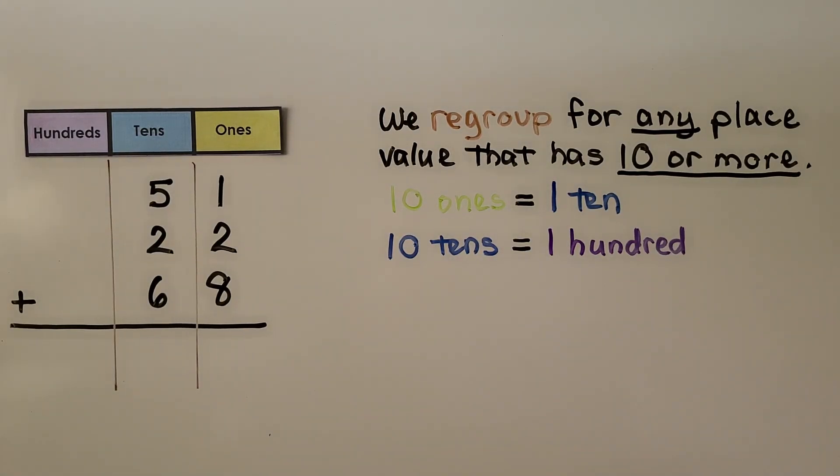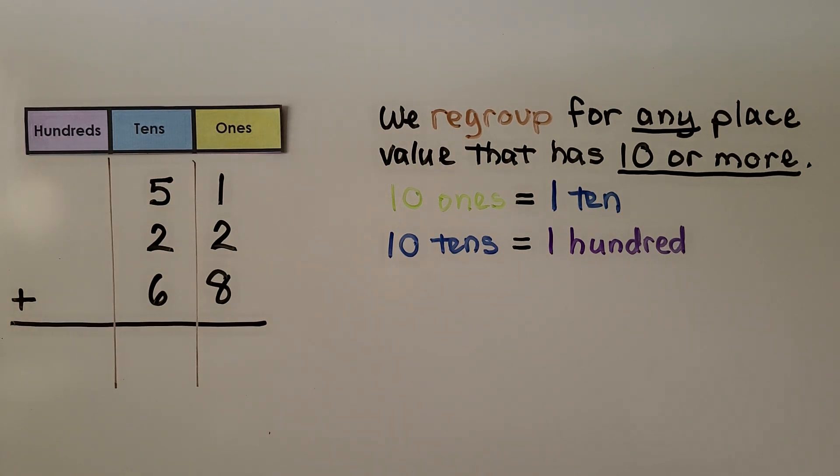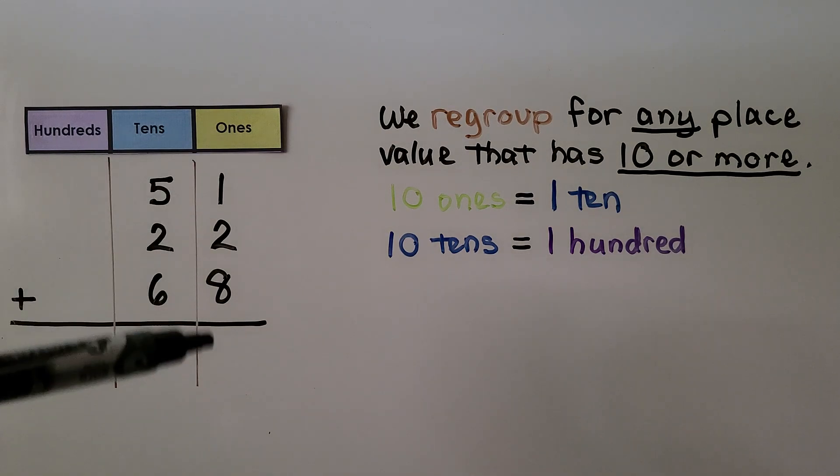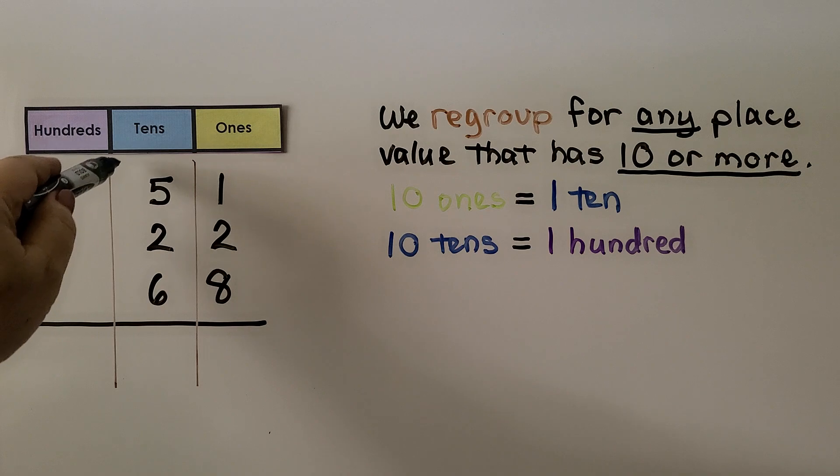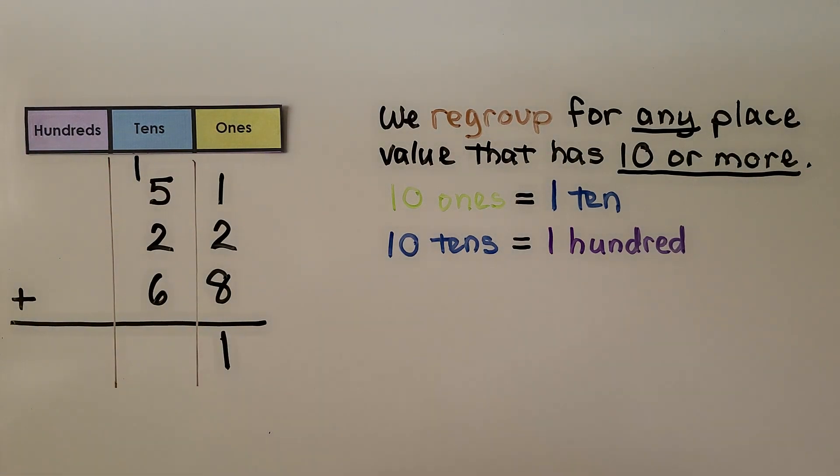We regroup for any place value that has 10 or more. 10 ones is equal to 1 ten. 10 tens is equal to 100. Here we have our ones place that we add first. We have 8, 9, 10, 11. We regroup 1 ten up here and write the 1 in the ones place. Now we have 5 plus 1 is 6. We can make a doubles, 6 plus 6 is 12, 13, 14. 14 tens, that gives us 10 tens, which is 100, and the 4 tens that are remaining. Our sum is 141.